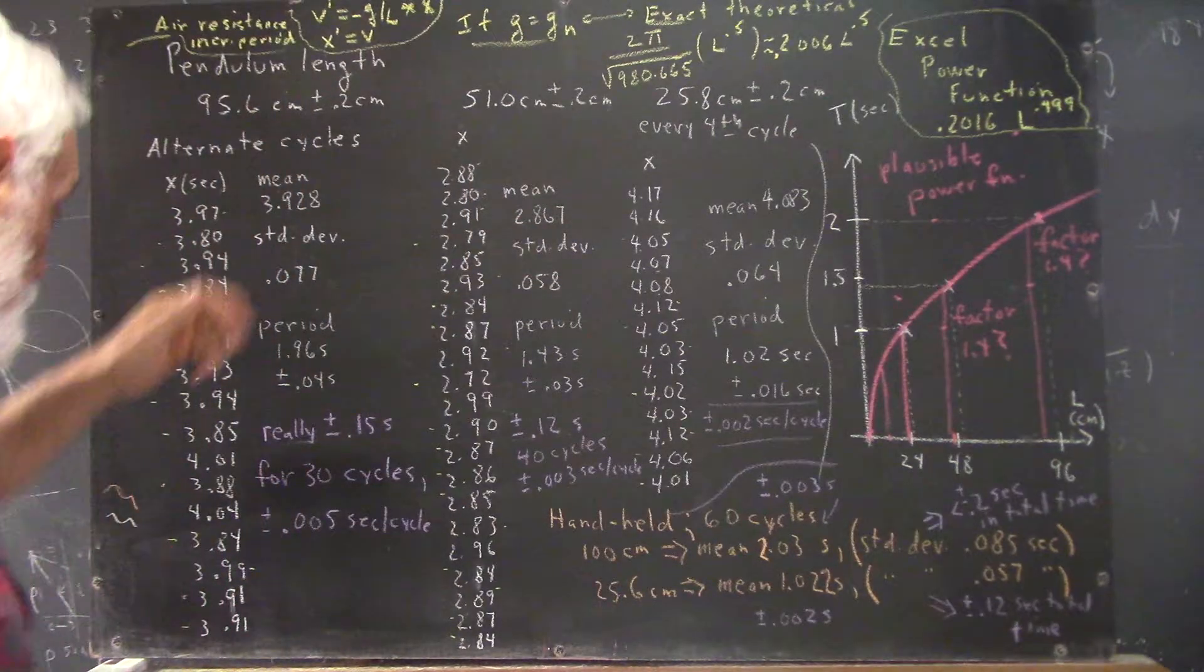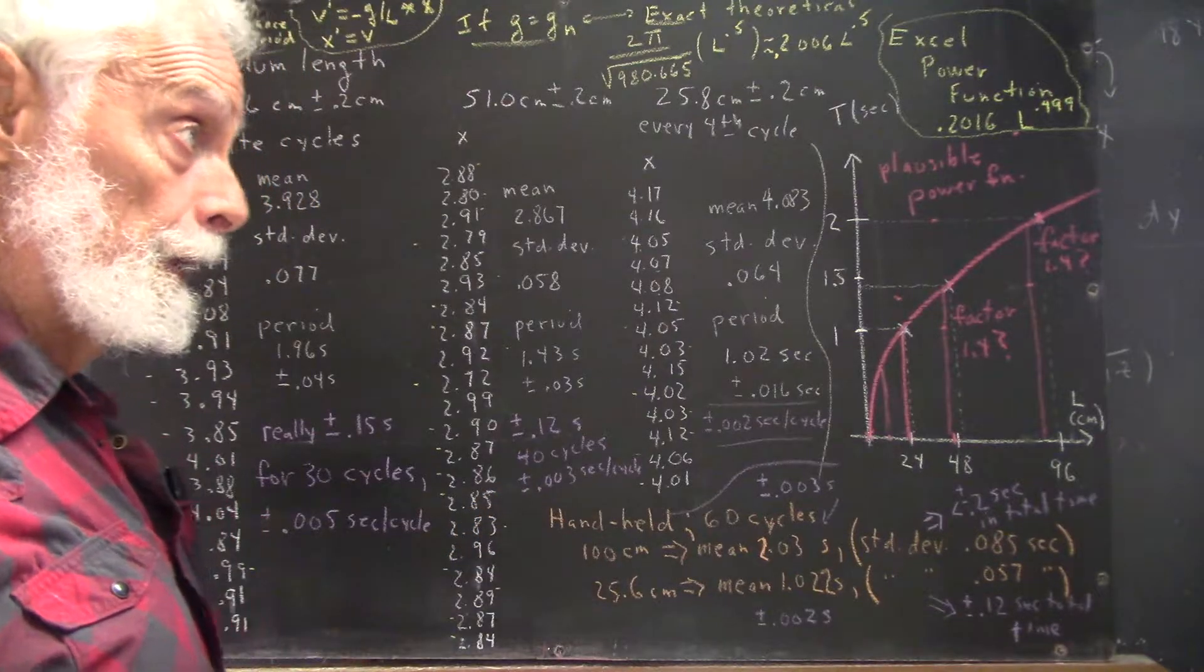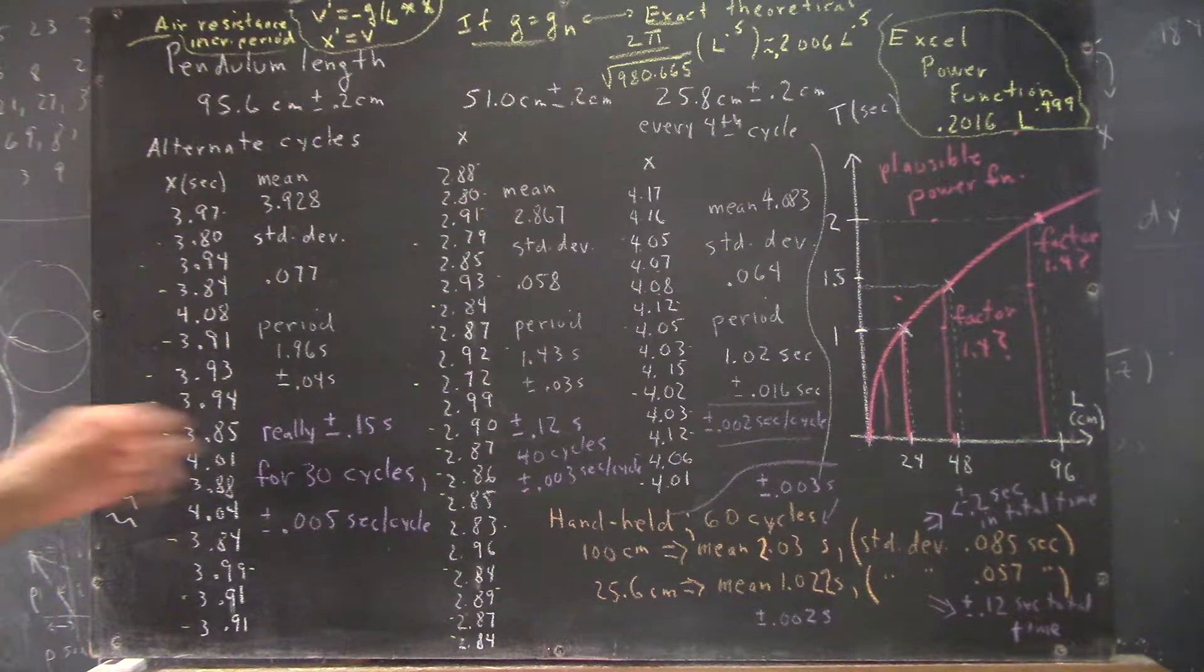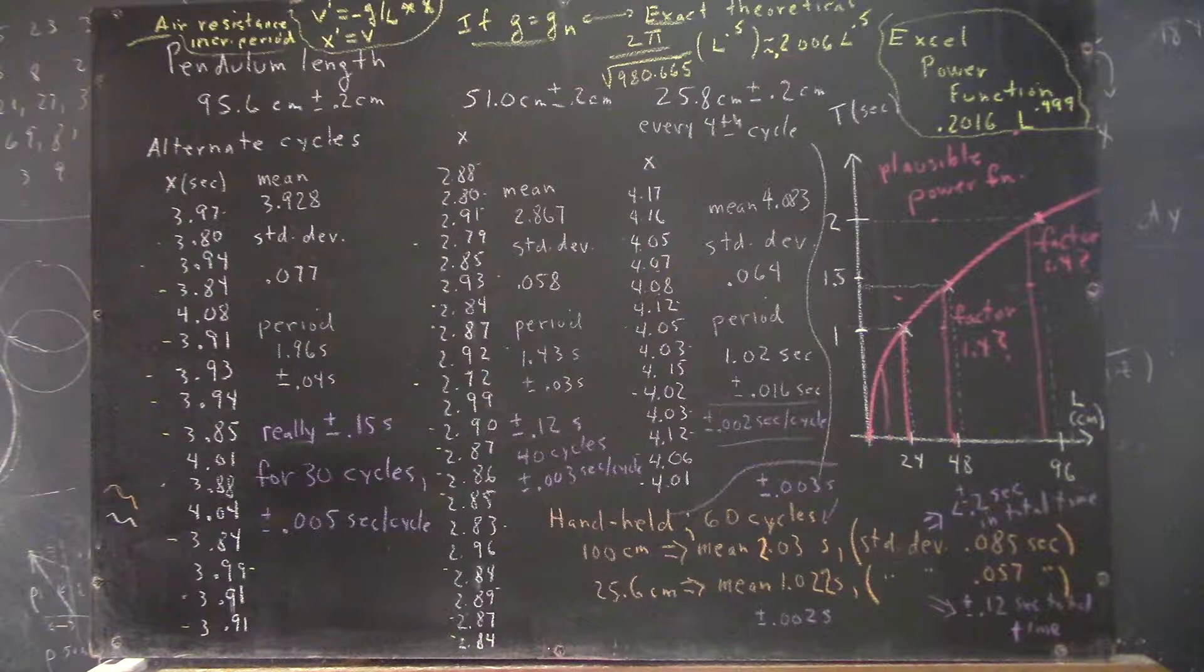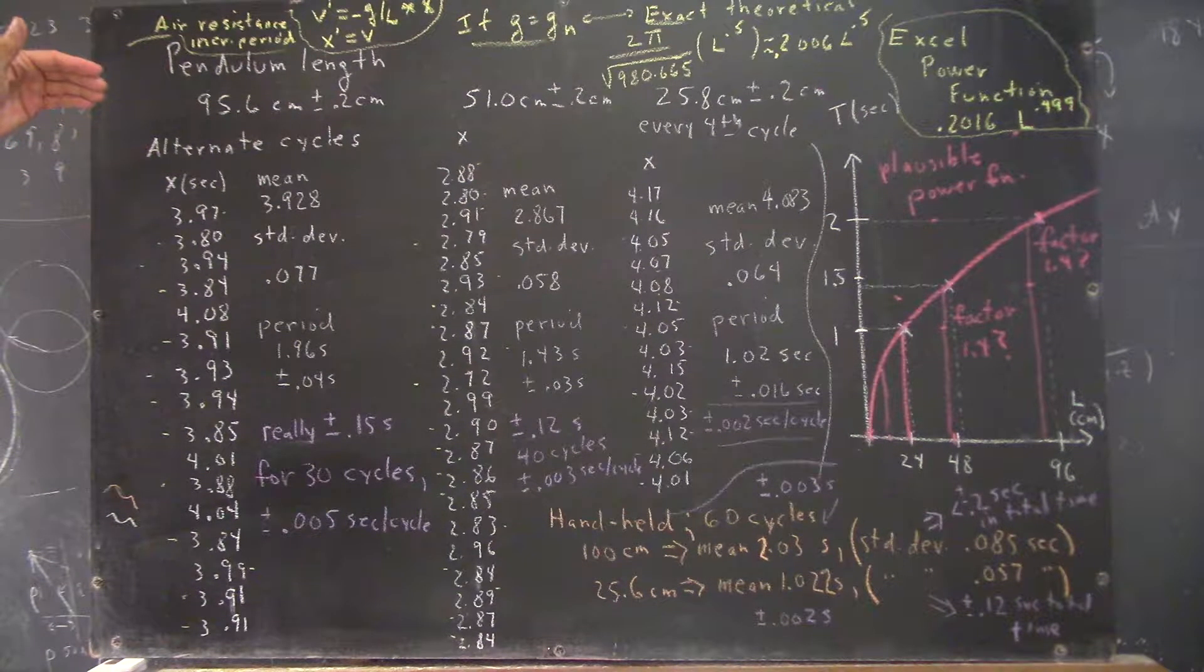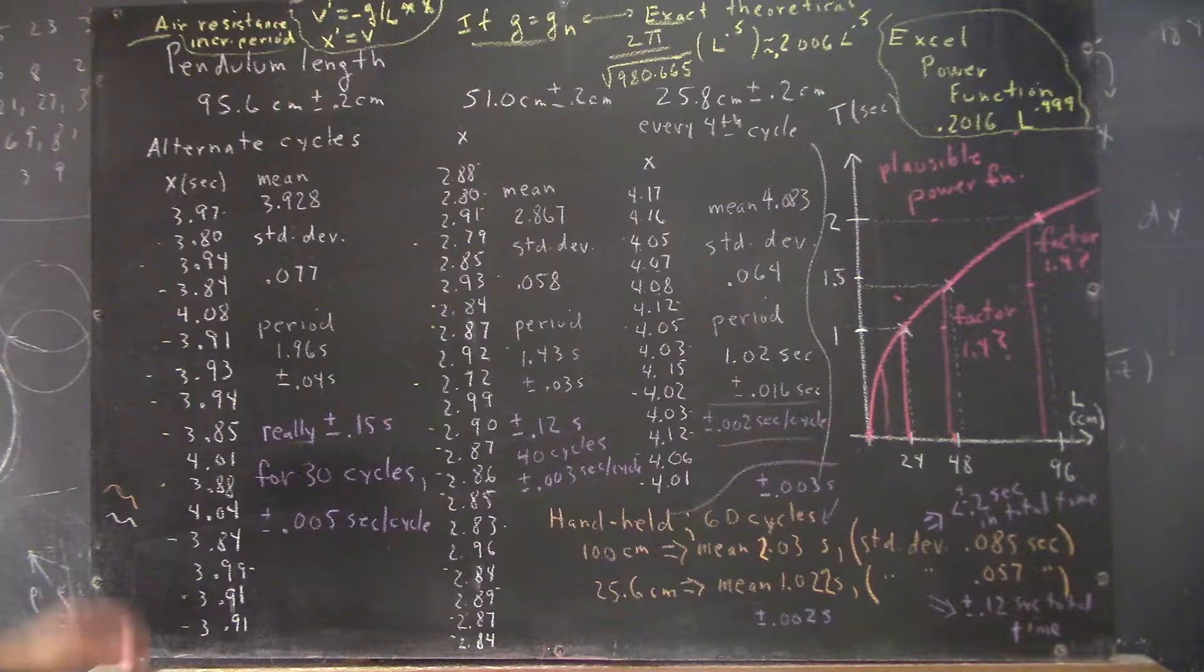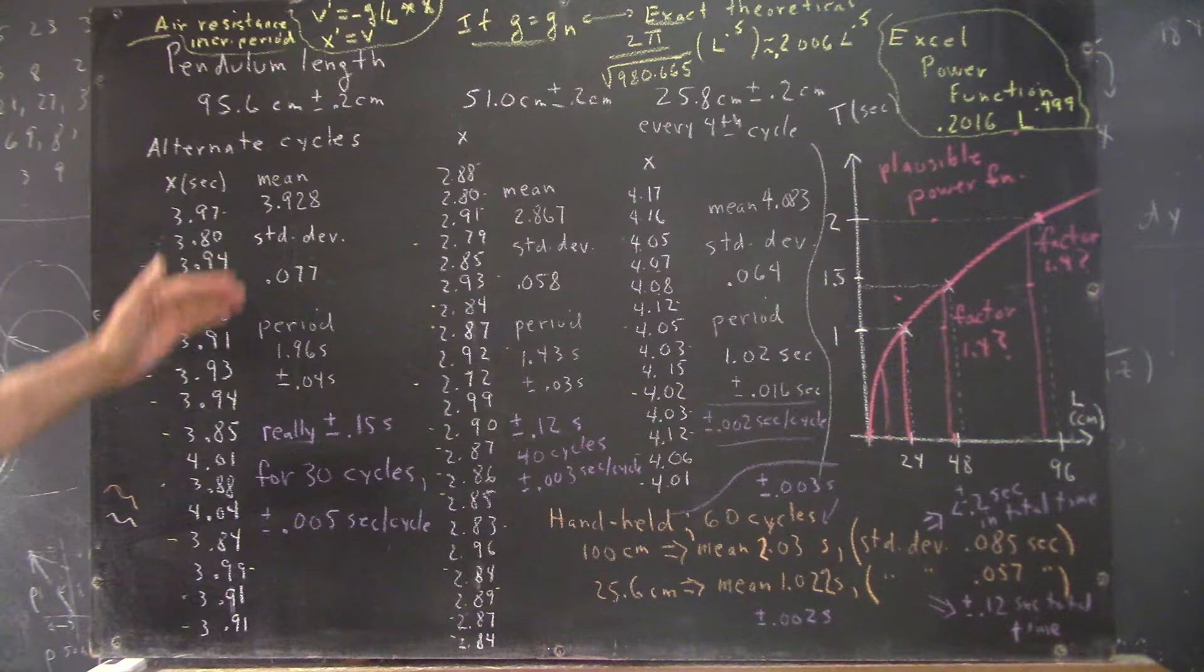So, the data we had here was for a well-anchored pendulum. I took data for the handheld pendulum, and I'll talk about that in a minute. But right now, I want to just back up and tell you what we've got for the original data for the anchored pendulum, and a couple of things that you need to understand about this data.